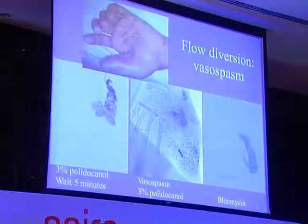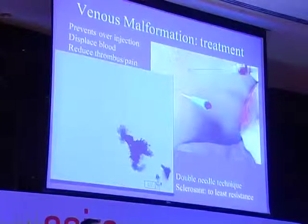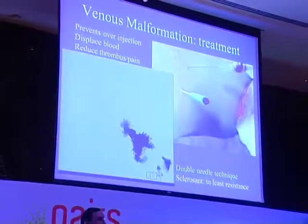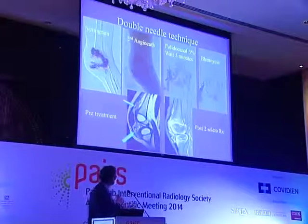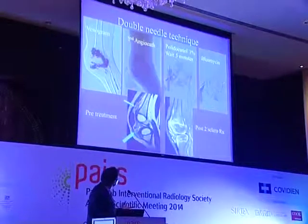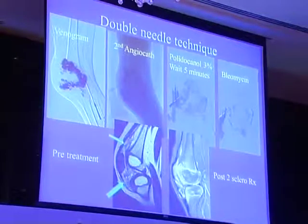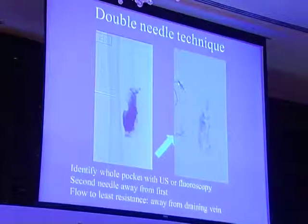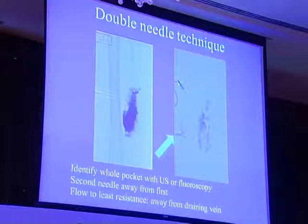For big draining veins, inject, wait, and then fill the rest. Another flow diversion method is the double needle technique — two punctures reduce contact between drug and the malformation: push drug through one needle and blood exits through the other. Five minutes later, use a second agent — bleomycin. Pre- and post-treatment results are pretty good after two sessions.